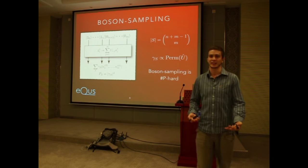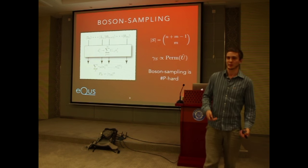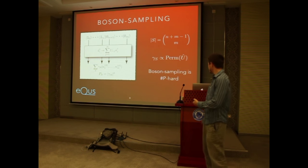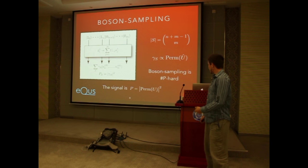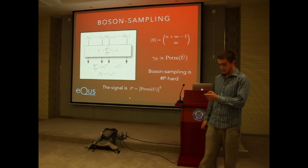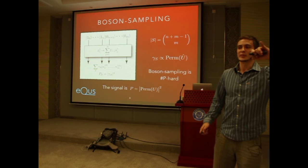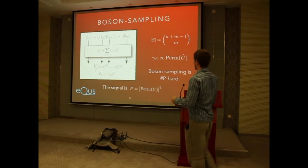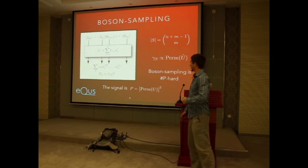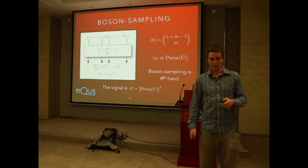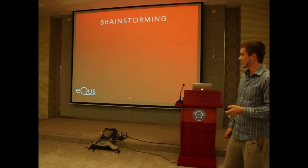This is what makes boson sampling interesting: it can simulate a system that no classical computer can actually calculate when you make N large enough — somewhere around 30 or maybe 40. For the purpose of this talk, the signal that comes out is given by the permanent of the unitary matrix.